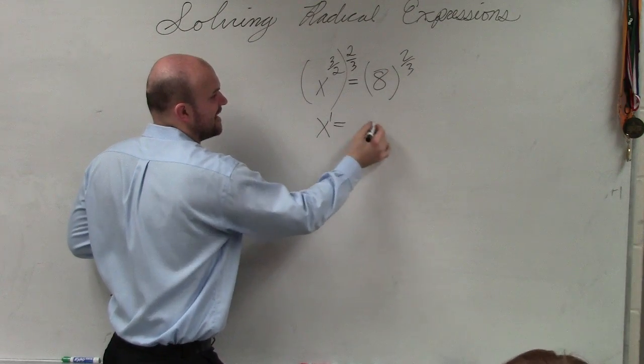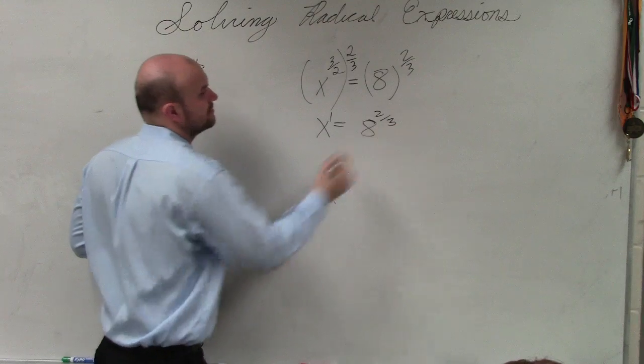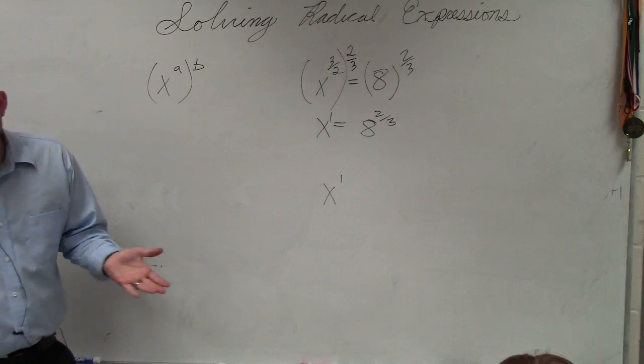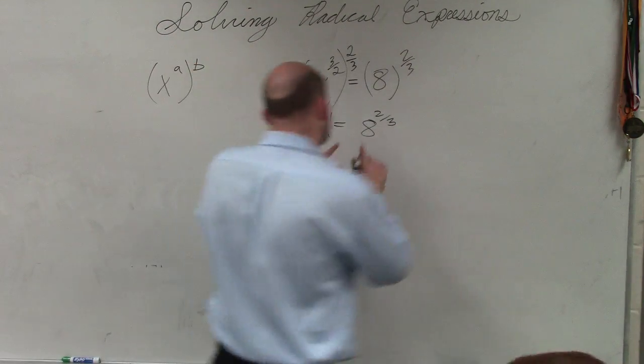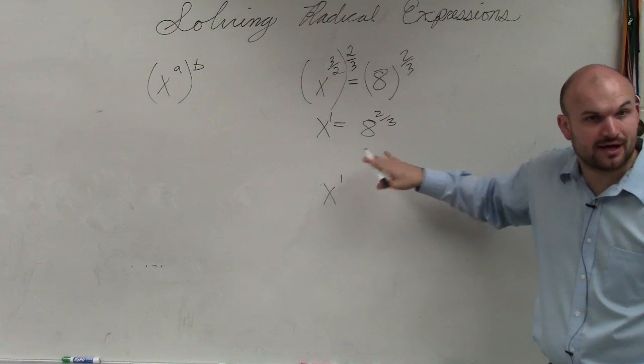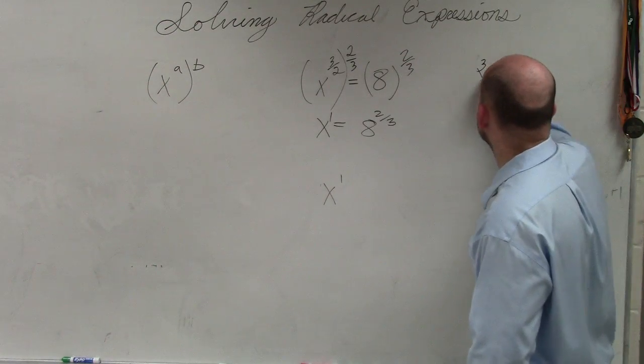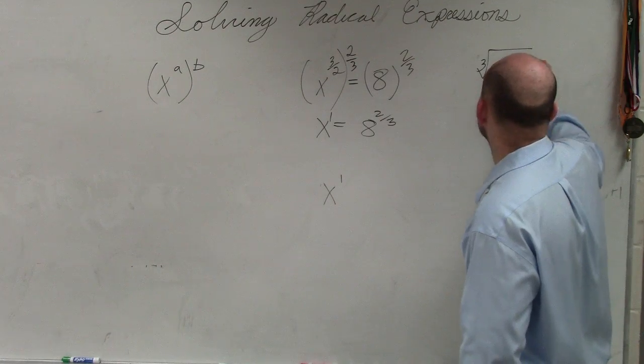Now I simply just have 8 to the 2 thirds, OK? Now there's a couple different ways we can do this. The first way is you guys can rewrite this as a radical expression, which would be the cube root of 8 squared.